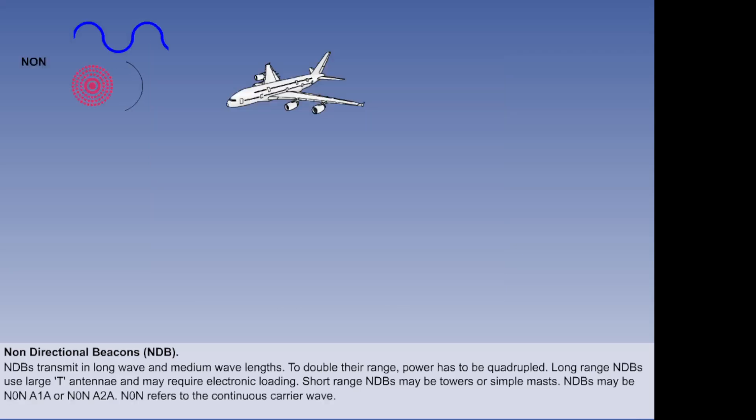Two types of modulation characteristics are commonly used for NDBs: N0N A1A and N0N A2A. The N0N part of the signal is, as we saw earlier, the continuous carrier wave, and it is ideally suited to enable the ADF equipment to establish the direction from which the signal is arriving.